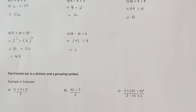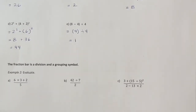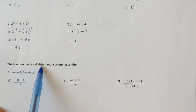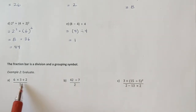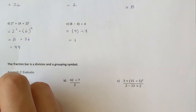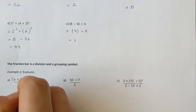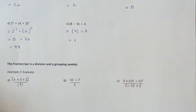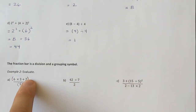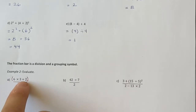Next we move on to questions that look like fractions. The fraction bar is both a division and a grouping symbol, meaning you must do everything in the numerator first and then divide by the denominator. That's what grouping symbol means: do everything in the numerator first, then divide by the denominator.